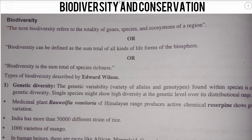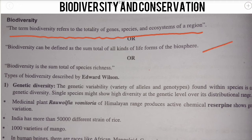The term biodiversity refers to the totality of genes, species, and ecosystems of a region. Genes means genetic variability, species means diversity at the species level, and ecosystem means habitat.